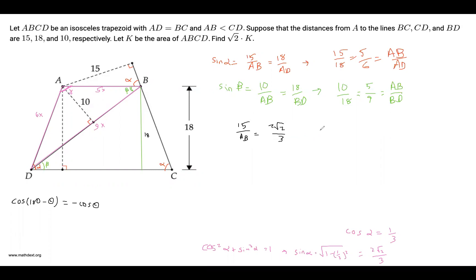And that is 2 root 2 over 3. Which means that if we solve for AB, we get AB is 45 root 2 over 4.